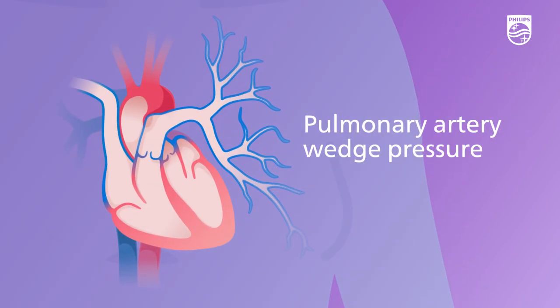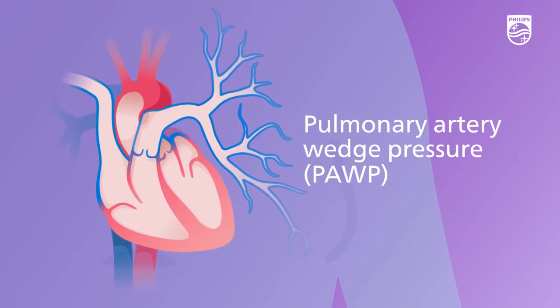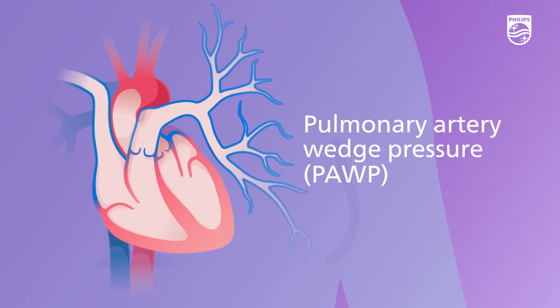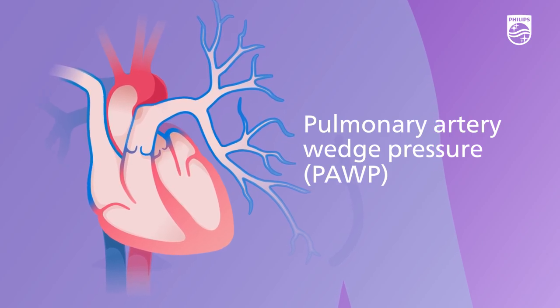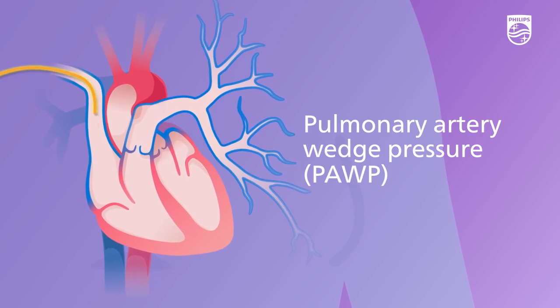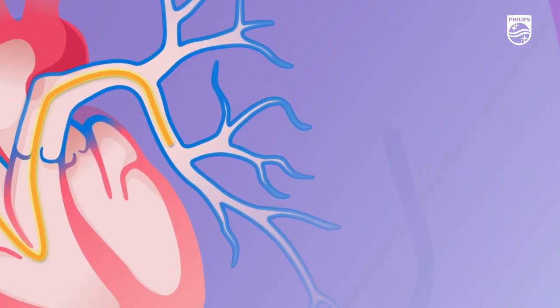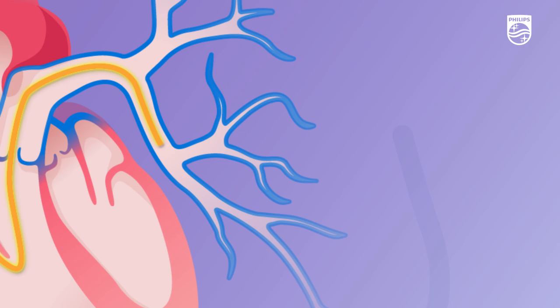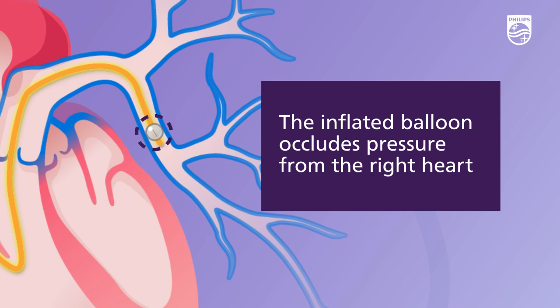Pulmonary artery wedge pressure, or PAWP, is an aperiodic measurement that is non-continuous and is performed utilizing a pulmonary artery, or PA, catheter. With the PA catheter tip located in a pulmonary artery branch, a balloon is inflated which occludes pressure from the right heart.